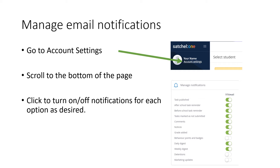When you're in there, go into account settings and scroll towards the bottom of the page. You'll find a notifications tab. Within there, turn on or off notifications for each option as desired.